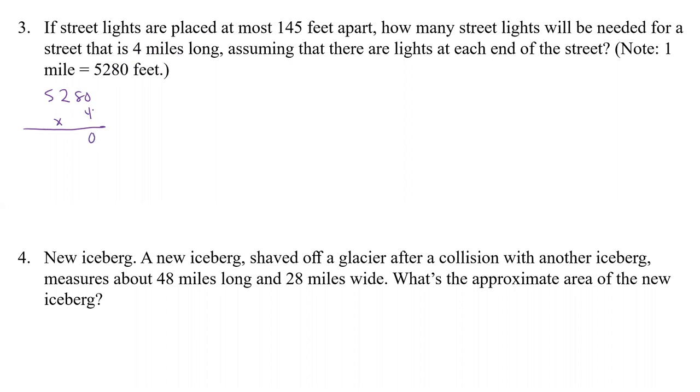So four times zero is zero. Four times eight is 32. So we have a two, carry a three. Two times four is eight, plus three is 11. Four times five is 20, plus one is 21. Okay. So that's how many feet there are in those four miles. And now we have to think about, we have to split each one of those up. So we have to kind of divide here. And so we have to divide the total number by 145. So we're going to take 145 into 21120.